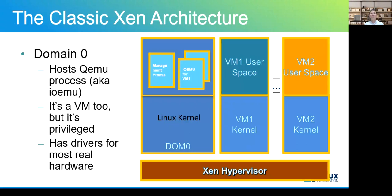Here is a classic Xen architecture. There is a hypervisor under all VMs, and there is a special VM called Domain Zero. It's privileged. It provides services and also manages other VMs. For example, there is an IO-EMU process for each VM to do device emulation. Usually, we only let Domain Zero see the real hardware. All other VMs only see the emulated fake devices.